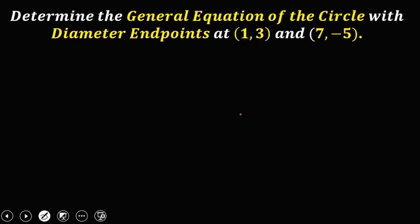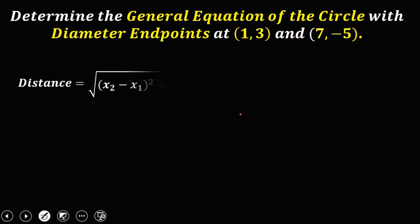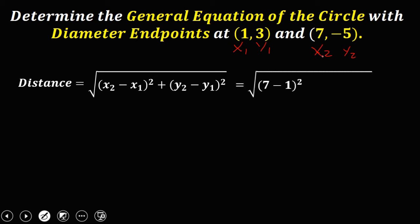For the length of the diameter, using the distance formula: square root of (x₂ minus x₁) squared plus (y₂ minus y₁) squared. Using the same values — x₁ is 1, y₁ is 3, x₂ is 7, y₂ is -5 — substitute now the values: square root of (7 minus 1) squared plus (negative 5 minus 3) squared.